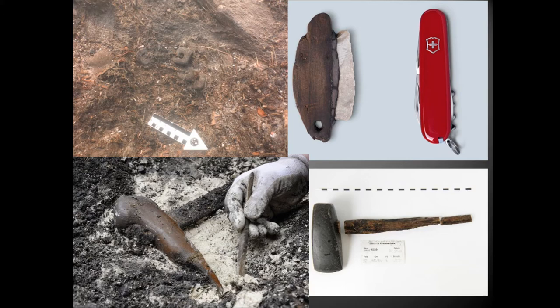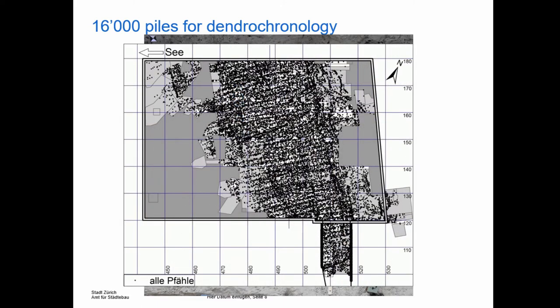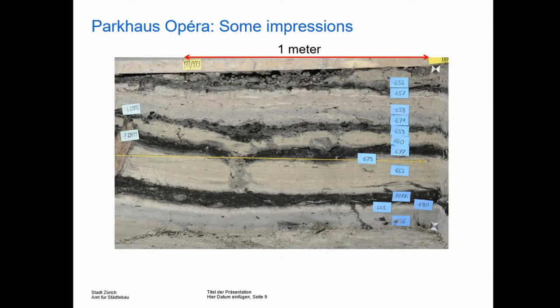One of the most important types of organic matter preserved is, of course, the wood — especially the piles. These piles are remnants of the former platforms or houses. In the excavation of Zurich Opera, the last big one we conducted, we documented over 16,000 of these piles, making it an excellent resource for every dendrochronologist. Of course, these piles don't belong to one phase; they are part of a grand local stratigraphy.